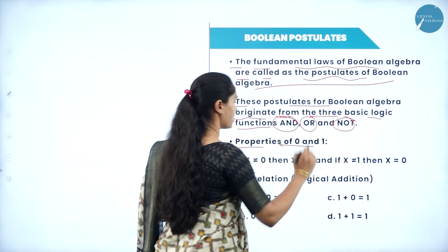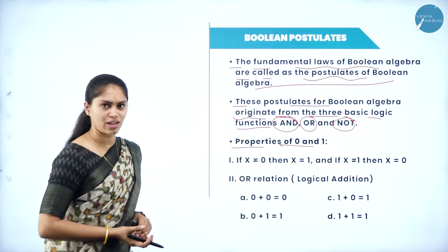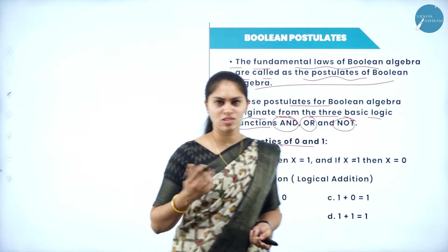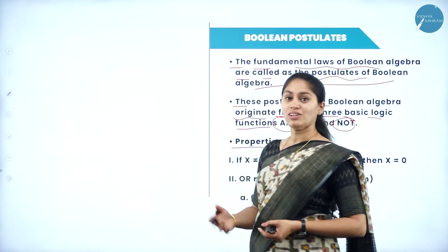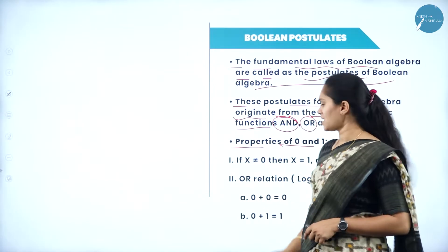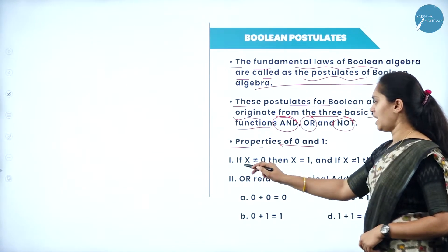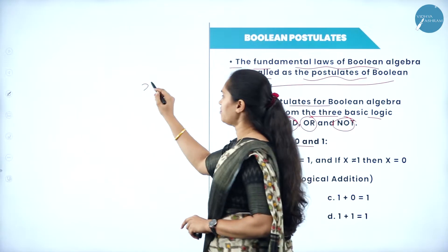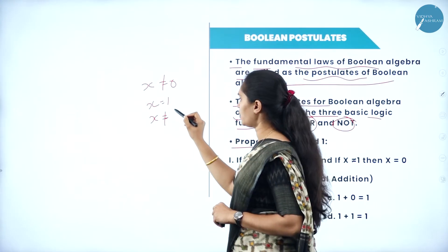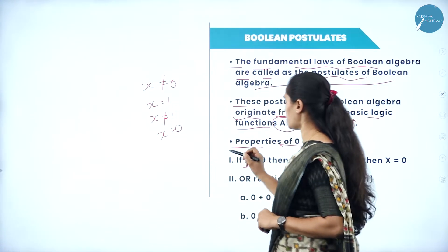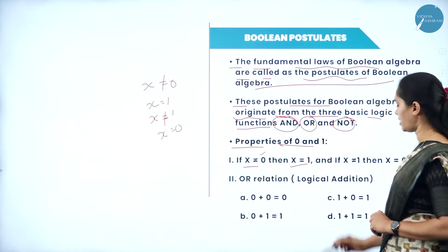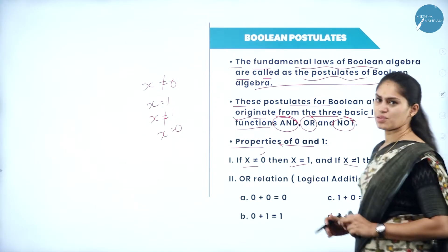The first postulate is properties of 0 and 1. In Boolean algebra we deal with only 0s and 1s. If my value is not 0, then it must be equal to 1. If my value is not 1, then it must be equal to 0. That is the properties of 0 and 1 — if x is not equal to 0 then x must be 1, and if x is not equal to 1 then x must be 0.